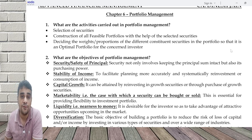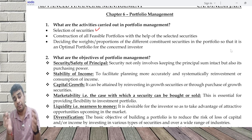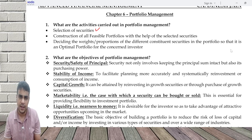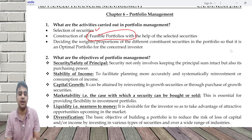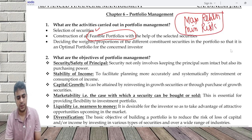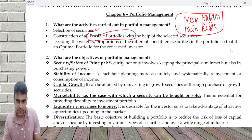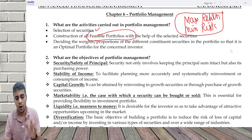The first thing is very clear: selection of securities in which the investment would be done. Once you have decided on 10 securities, you can create multiple feasible portfolios from those securities — different combinations, different balances, different weights. From this final combination, you decide an optimal portfolio. An optimal portfolio maximizes return, or minimizes risk, or balances both depending on your requirement. You decide the weight or proportion of each security so that it is optimal for the concerned investor.